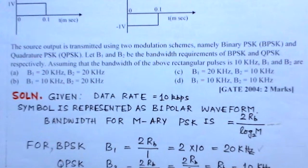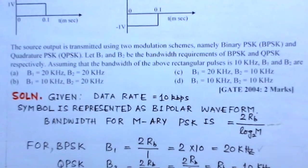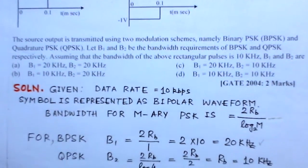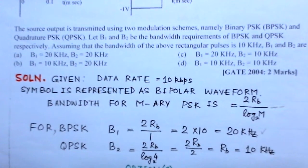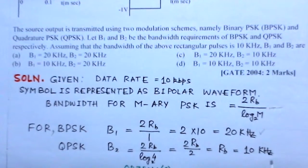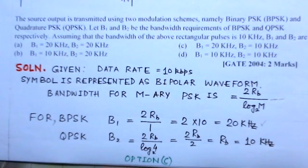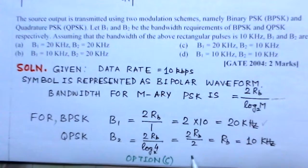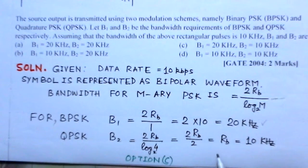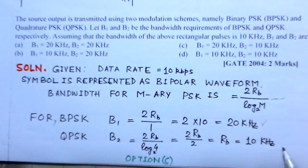And for QPSK system, this is a 4-ary system, so 2RB over log of 4 to base 2. We can find here this is 2 times RB divided by 2, so this will be equal to RB, that is 10 kilohertz. So the bandwidth B1 is 20 kilohertz and B2 is 10 kilohertz.